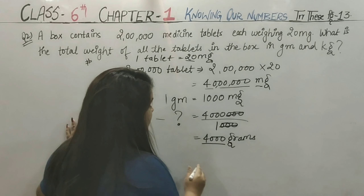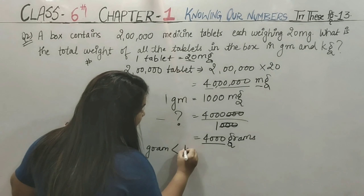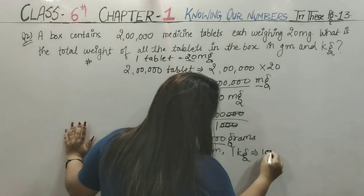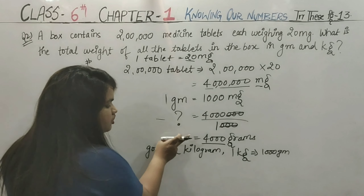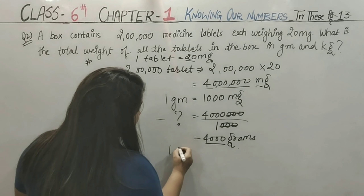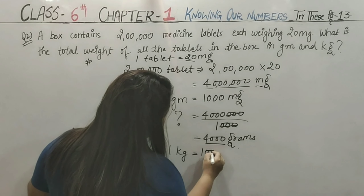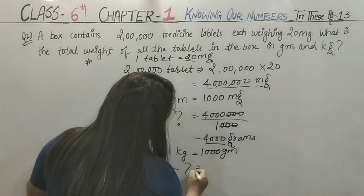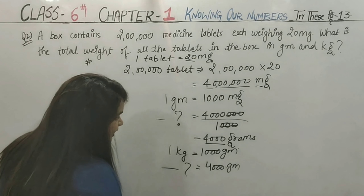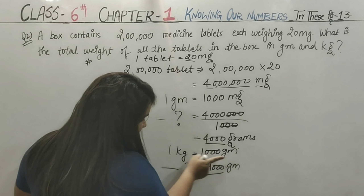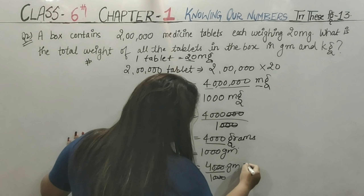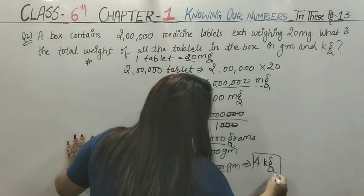Now convert 4,000 grams to kilograms. Gram is smaller than kilogram, and 1 kilogram equals 1,000 grams. Since we are converting from a smaller unit, we divide again. 4,000 divided by 1,000 — the three zeros cancel — and the answer is 4 kilograms. So the total weight of all tablets in the box is 4 kilograms.